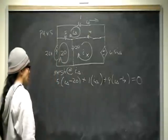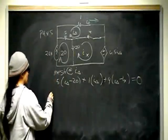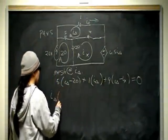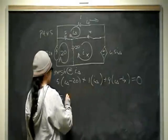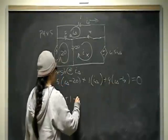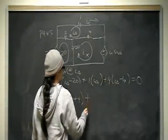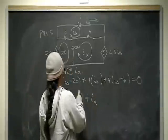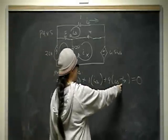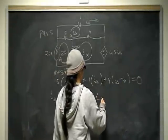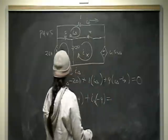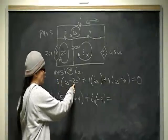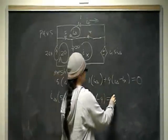Now we're going to group coefficients. So we've got I delta, I've got a 5 here, an I delta here that's going to be 1, I delta here that gives me 4. That's all my I deltas. Now my Ix's. So I've got one Ix here with a coefficient of negative 4. Constants go on the other side. I have a constant here. 5 times negative 20 is negative 100, it'll go on the other side as positive 100.